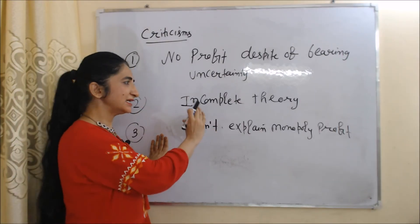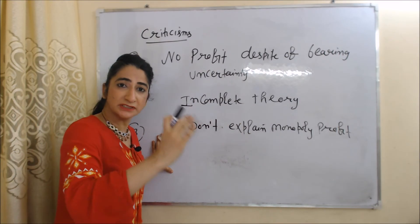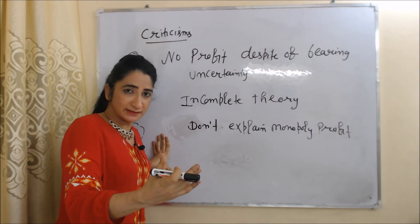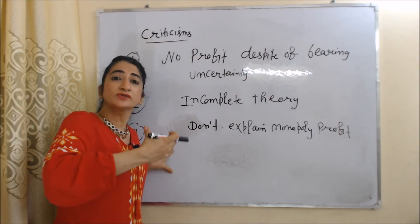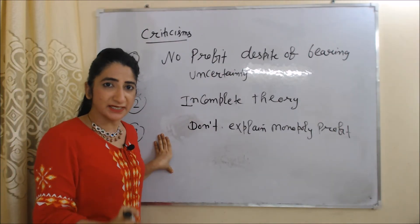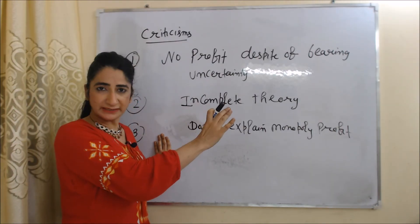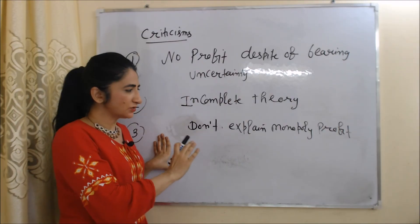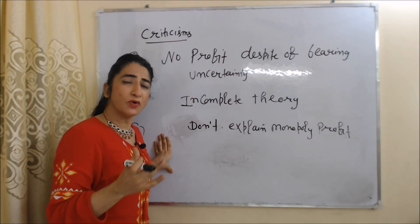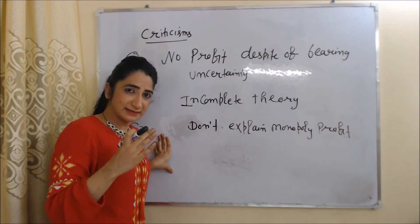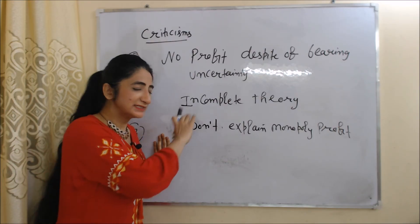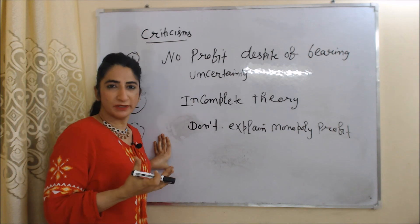Next criticism is that it is an incomplete theory. According to this theory, profit is only the reward of bearing uncertainty, but profit depends on so many factors that this theory doesn't explain. So we can say this is an incomplete theory. Last criticism is that it doesn't explain monopoly profit. In the case of monopoly, there is less uncertainty because they don't have any competitor, but this theory doesn't explain about monopoly profit.